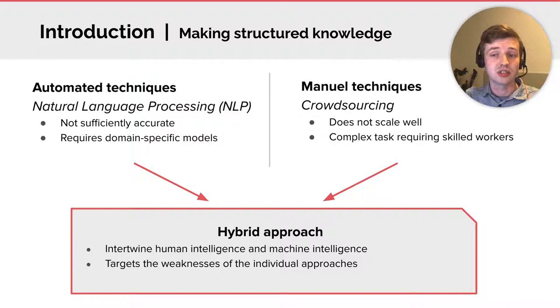In this research, we suggest a hybrid approach to generate these structured paper descriptions using a paper annotation system. This uses both machine intelligence and human intelligence, and it tackles the weaknesses of the techniques when they are employed in isolation. It even provides a synergy in the form of an intelligent user interface.